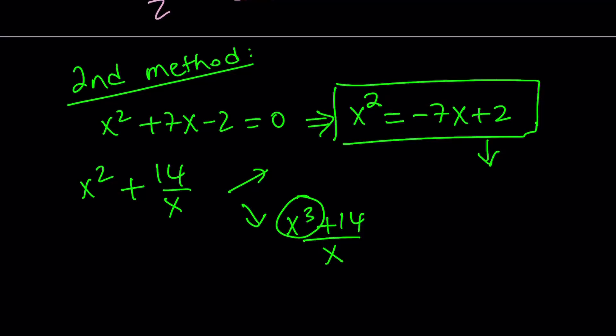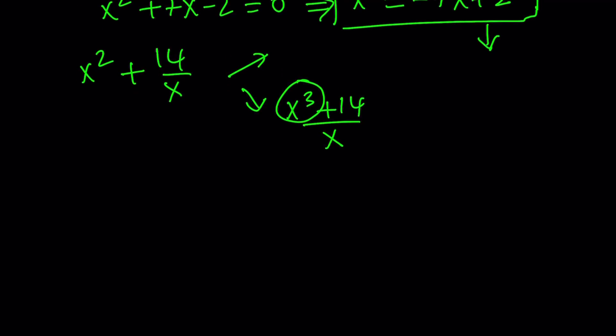So you just have to keep doing it. And every time, you're going to get a linear answer, because notice that x squared was expressed as a linear. x cubed can be expressed as a linear. Any power of x can be expressed as a linear function, basically, which is what's really cool about this method. Anyways, so now we're going to start with this. And now, I'm going to replace x squared, not x, x squared with negative 7x plus 2.